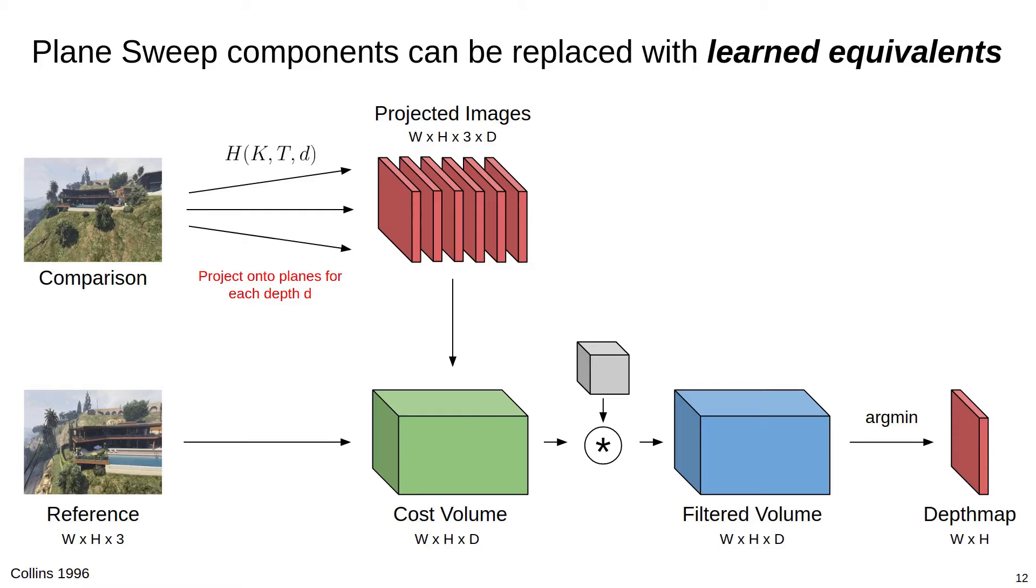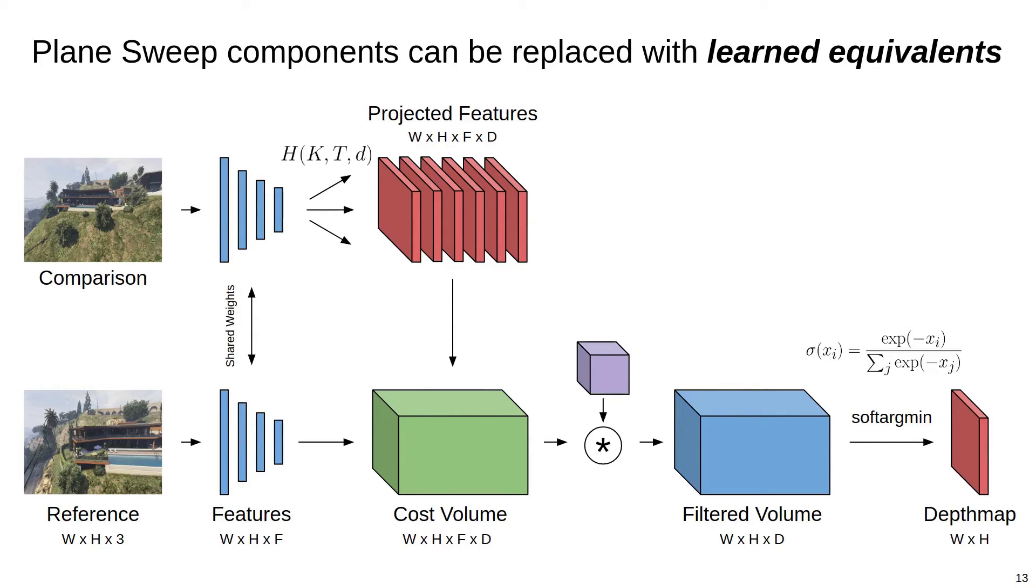Each component of the plane sweep pipeline can be replaced with learning-based equivalents. Learned features can be used instead of raw pixel intensities, the cost volume filter weights can be replaced with learned kernels, and the minimization over depth hypotheses in the cost volume can be replaced by a differentiable soft argmin operation, which allows for the entire pipeline to be trained end-to-end. Replacing these classical components with equivalents learned from data allows for robustness to things like lighting changes, missing or low texture, and other confounding factors found in natural scenes.